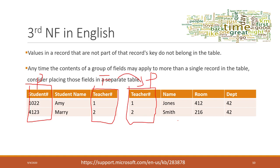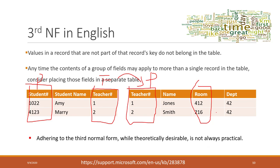That is the third normalization rule — if you have features or columns that are not a feature of the primary key, put them into a separate table. For example, the room of the faculty member is not a feature of the student, so we put it into a teacher's table. As long as you follow the first, second, and third normalization rules, your relational database design is considered great and you can use your tables without any major problems.